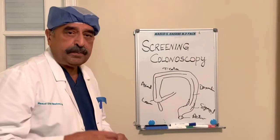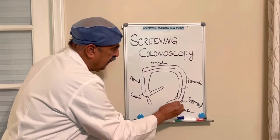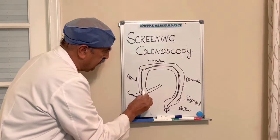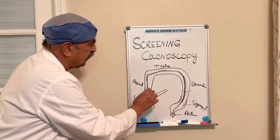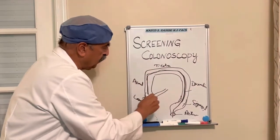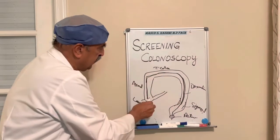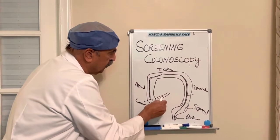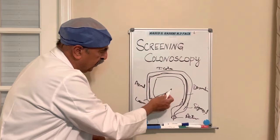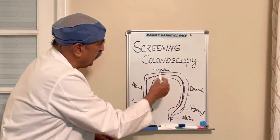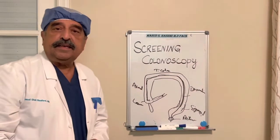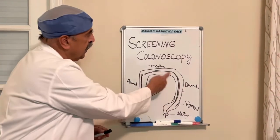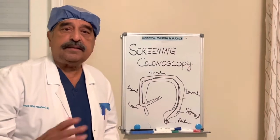The colonoscope is inserted from the rectum and it goes up and comes across. When it reaches the end, the procedure is done. After that, we pull it back slowly and we're looking through the camera in the scope, and then the scope comes out. That way we look at the entire colon, and sometimes you also go into the small bowel — roughly about a few feet — and look at the terminal ileum. So the screening colonoscopy means looking at the colon from age 45 to 50 to make sure there is no polyp, no tumor, on a patient who is asymptomatic.